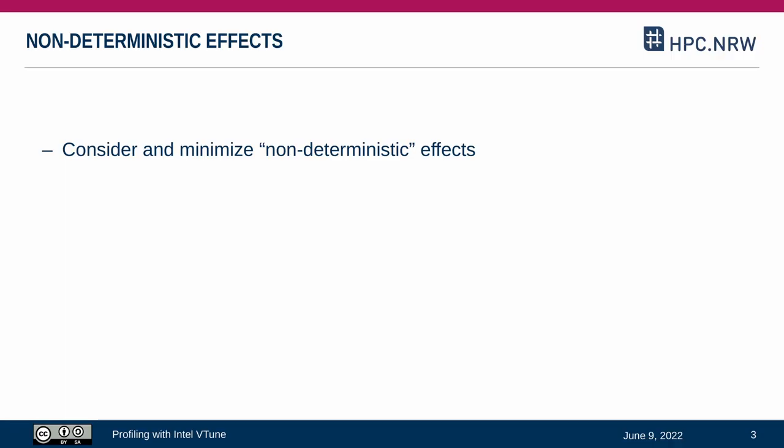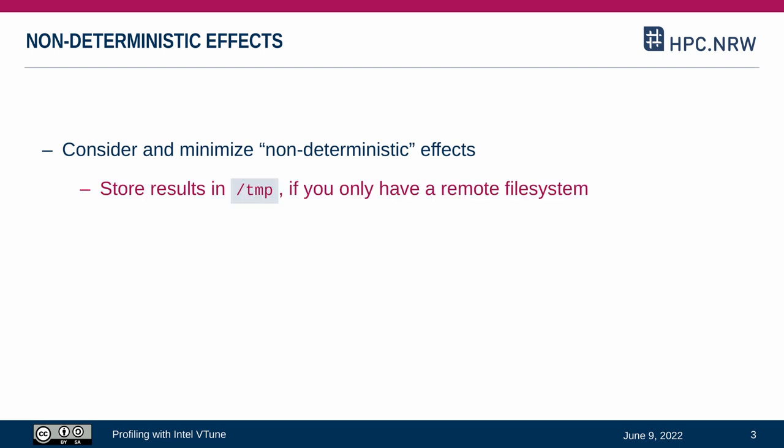A different topic is non-deterministic influences that you should consider during measurements. A very common cause is network communication — this could be through files on a shared file system or whenever your application depends on external connections. In some cases it may be enough to ensure that there is a local copy of all relevant files, maybe in /tmp. If you perform measurements on different platforms, you also have to take different underlying hardware into account.